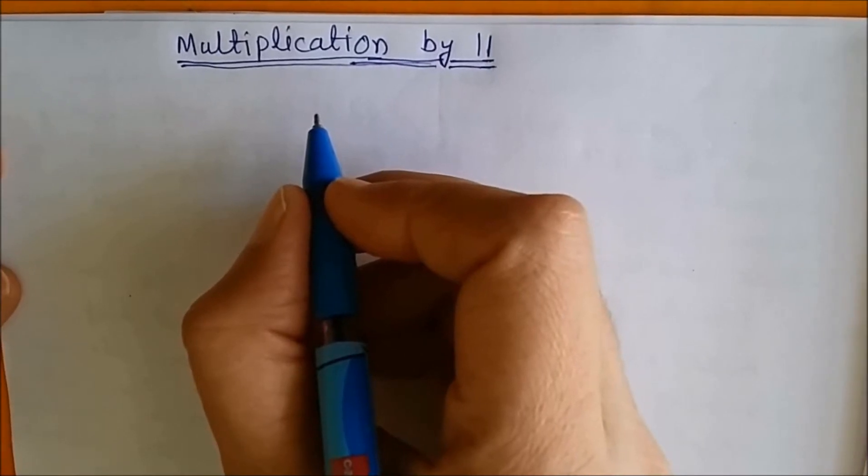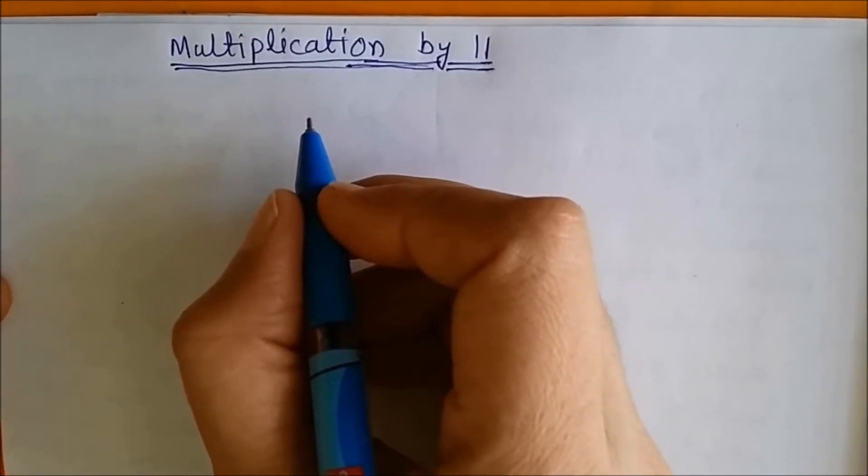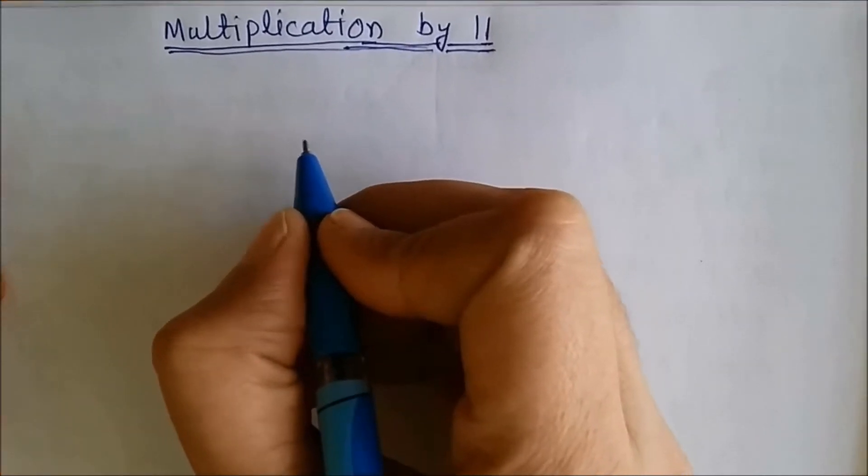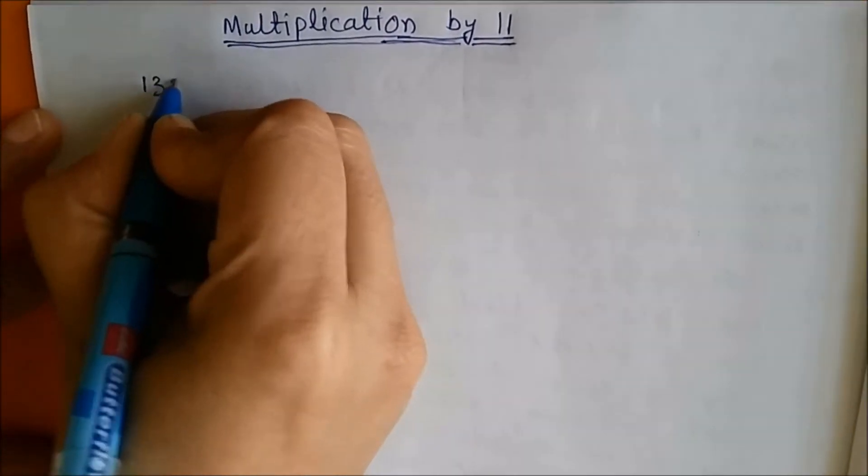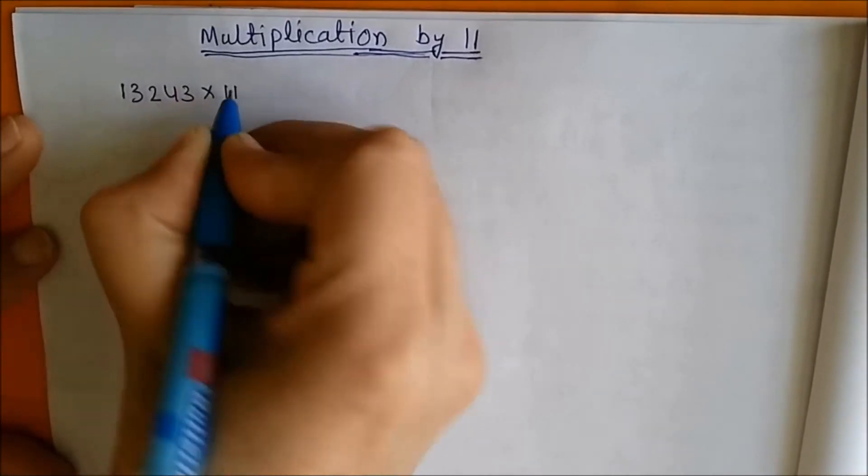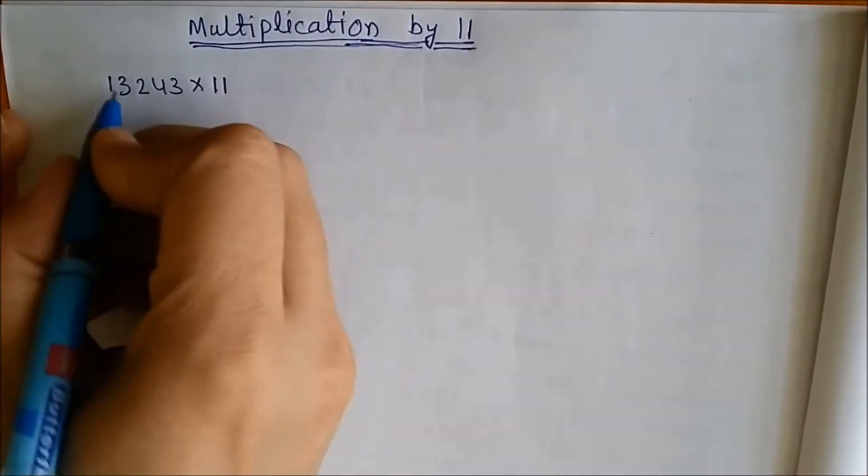Hello friends, I welcome you to the series of super fast calculation tricks. In this video we will learn how to multiply any number by 11. So see how I do the things. Let us take a number 13243 and multiply it by 11.